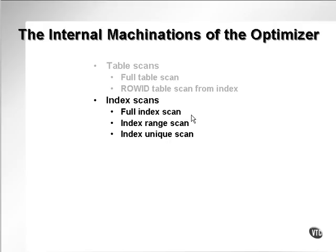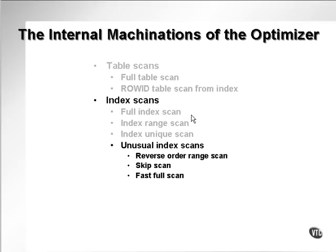It should be noted that an index unique scan is only used for single row access. If you access a table with WHERE x equals y but there are 200 rows that match the equality comparison, you can still execute a range scan — you cannot execute a unique scan unless you're finding a single row. There are some unusual and less often used index scans: namely a reverse order range scan, a skip scan, and a fast full index scan.